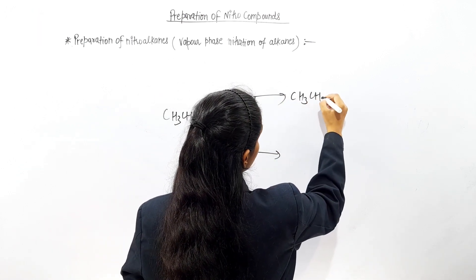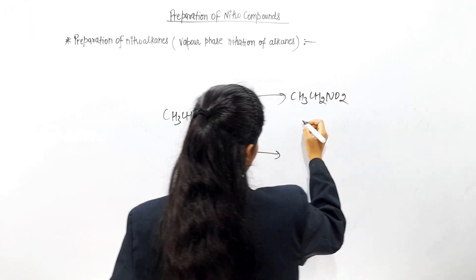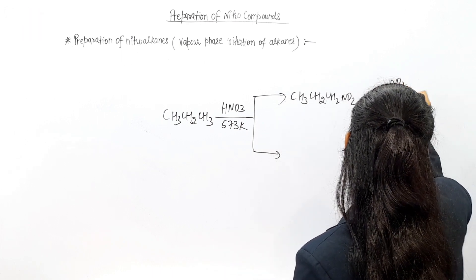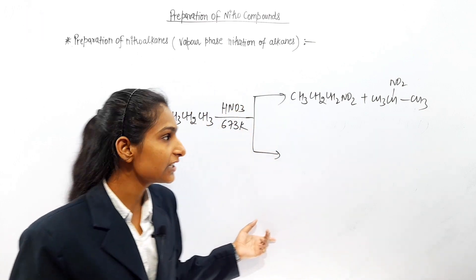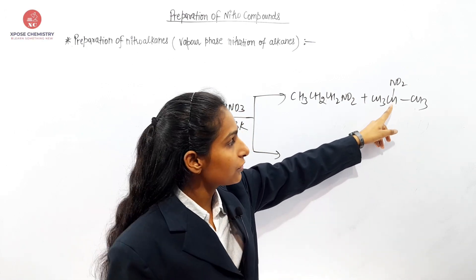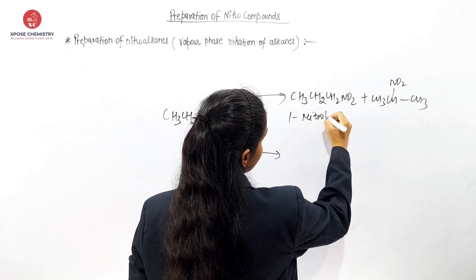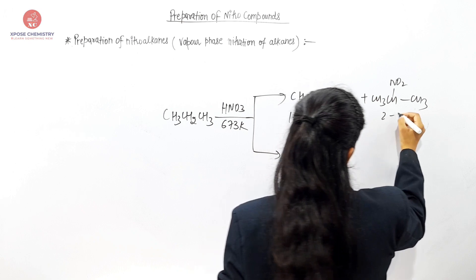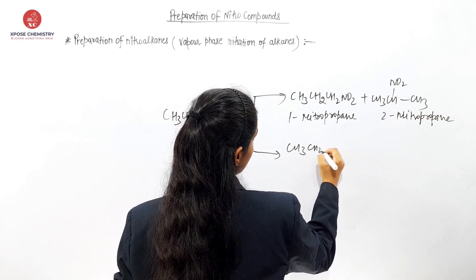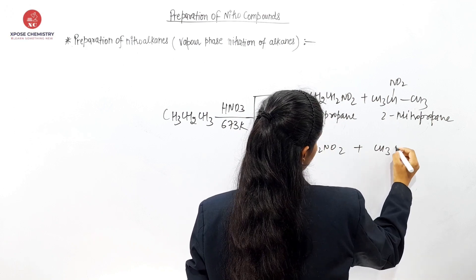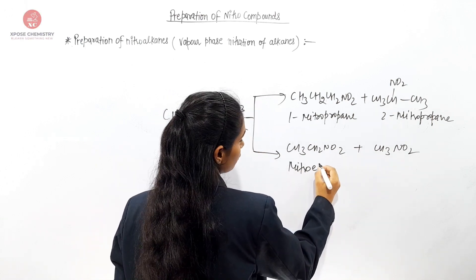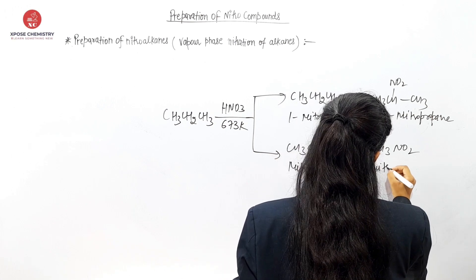The products will be: CH3-CH2-CH2-NO2 (1-nitropropane), and CH3-CH(NO2)-CH3 (2-nitropropane), and CH3-CH2-NO2 (nitroethane), and CH3-NO2 (nitromethane). So the four products are 1-nitropropane, 2-nitropropane, nitroethane, and nitromethane.